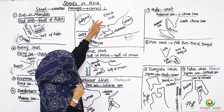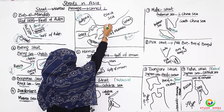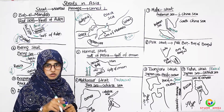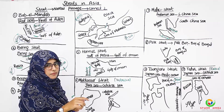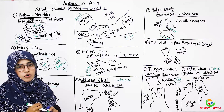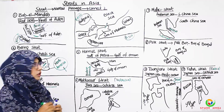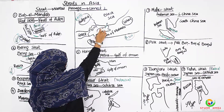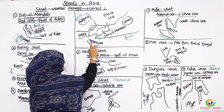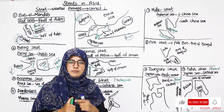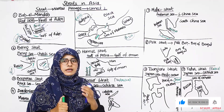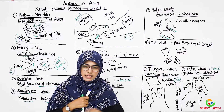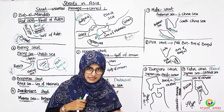The Bosphorus Strait connects the Black Sea and the Sea of Marmara. The Dardanelles Strait connects the Sea of Marmara and the Aegean Sea. If you are asked which two continents these straits separate, you say Asia and Europe. If asked which two straits are between them, you say Bosphorus and Dardanelles.